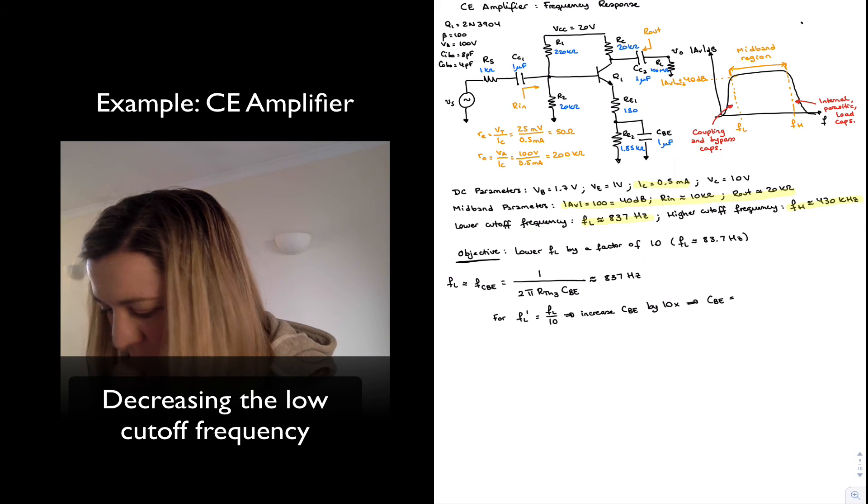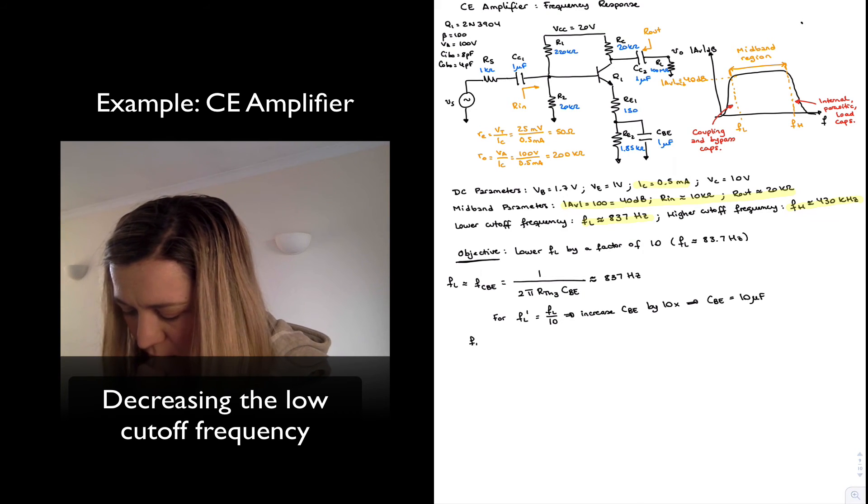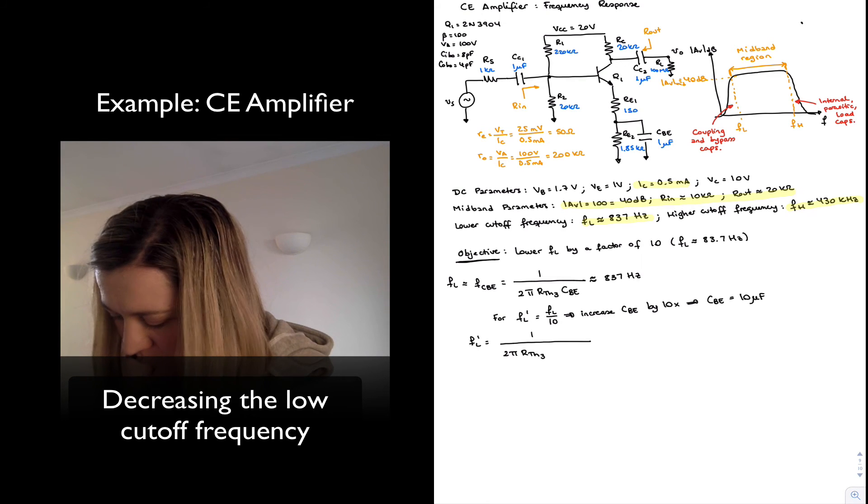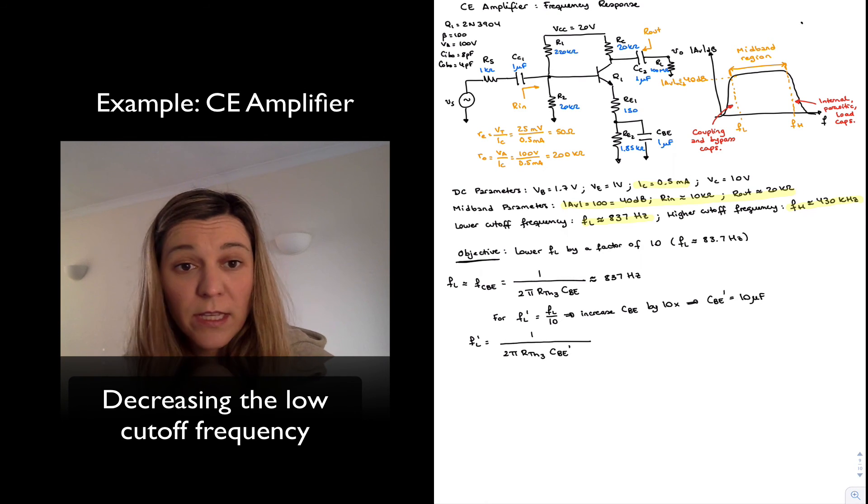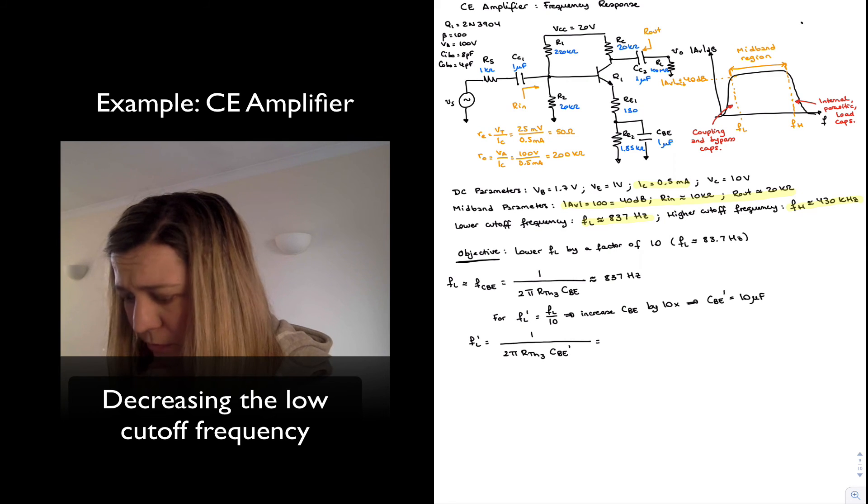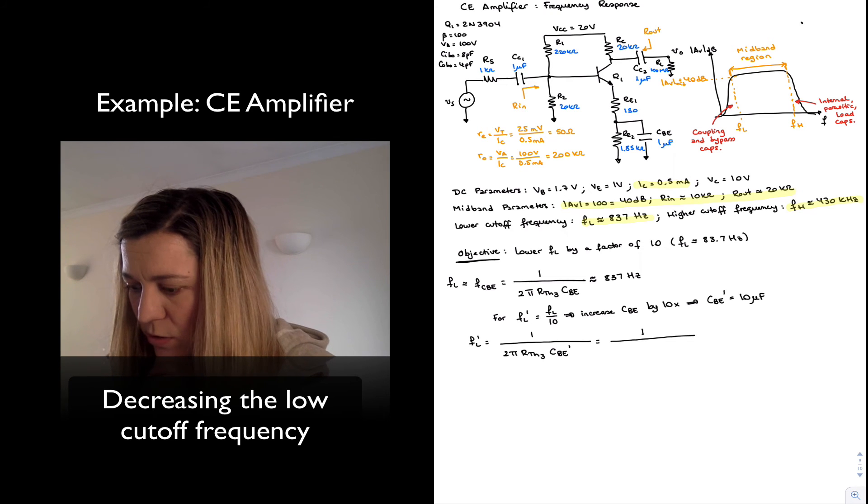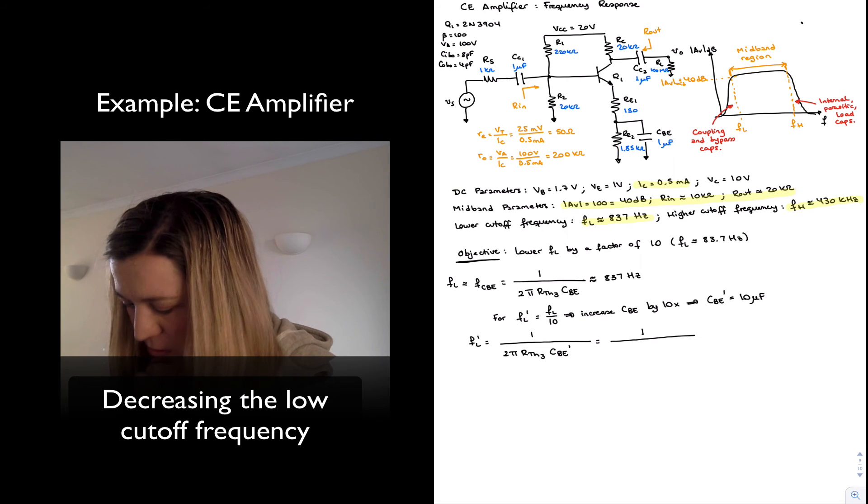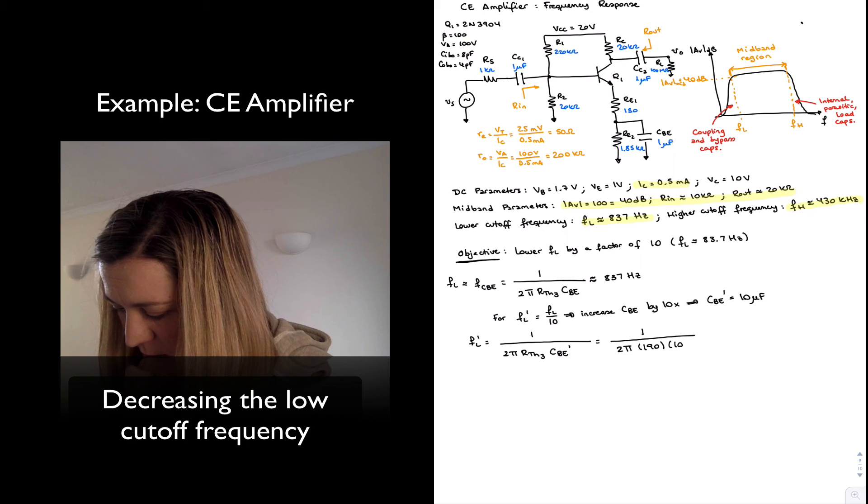That means CBE is going to be now 10 microfarads. And so I can calculate my FL prime, which will be equal to 1 over 2 pi R7 in 3. And I'm going to call this CBE prime to indicate that that's the capacitance that has changed. R7 in resistance from our previous calculations was equal to 190 ohms.